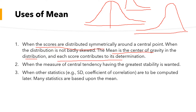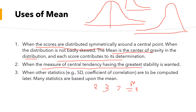Each score contributes to the determination of the mean. For example, if we have data values 2, 3, and 7, we add them: 2 plus 3 is 5, plus 7 is 12, divided by 3 equals 4 — that is our mean value, representing the entire data. This is the important thing about mean: every value contributes. In contrast, for median and mode we do not focus on all values, only on the midpoint or the most frequently occurring value.